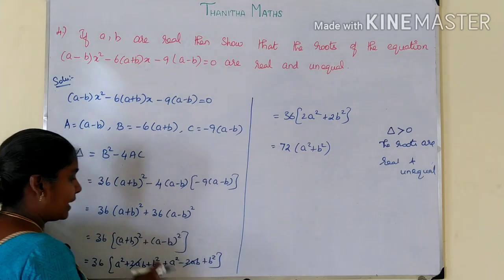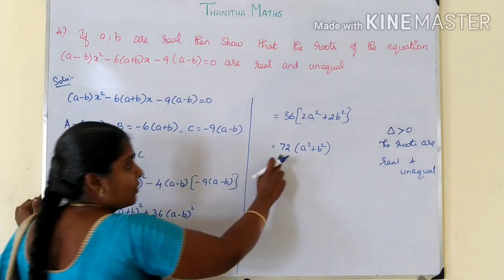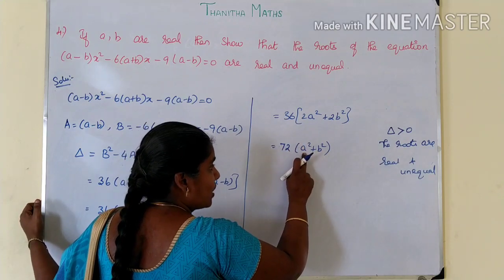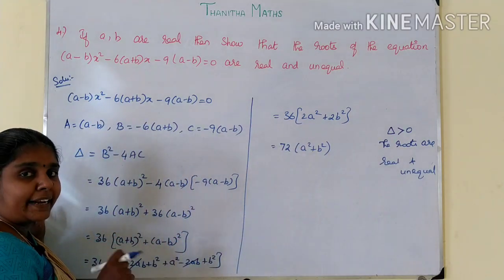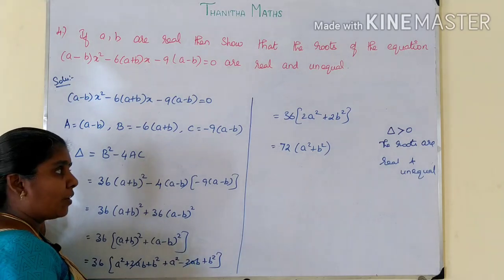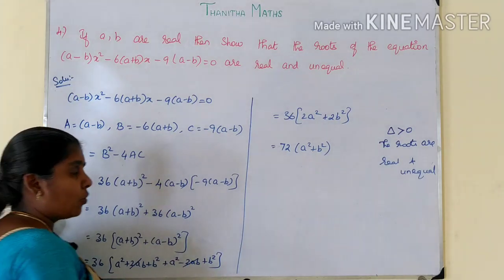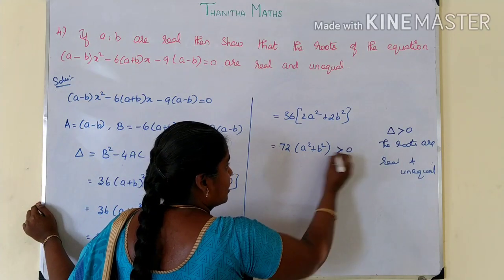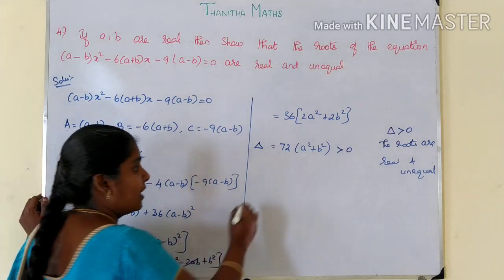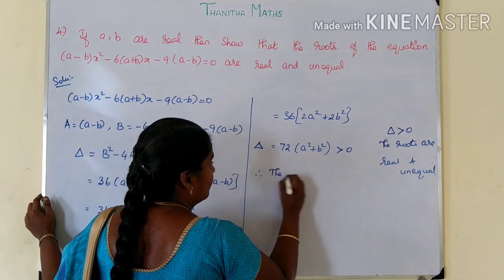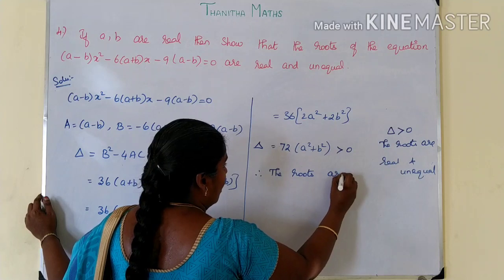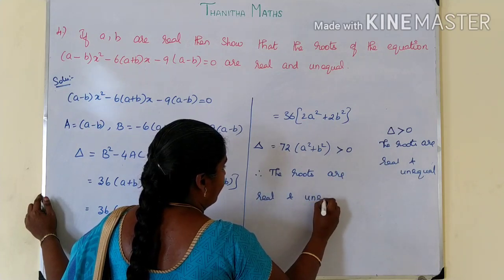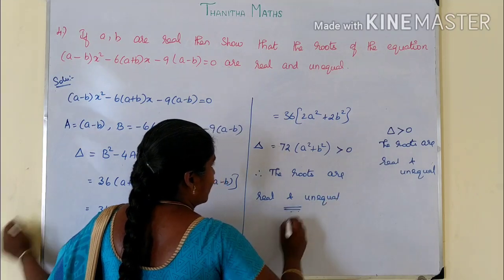So now we simplify: 72 into (a squared plus b squared). 72 is a positive number. a squared is always positive — even if a is negative, a squared is positive. Similarly b squared is always positive. Therefore, 72 into (a squared plus b squared) is always greater than 0. So delta is greater than 0. Therefore, the roots are real and unequal. Hence proved.